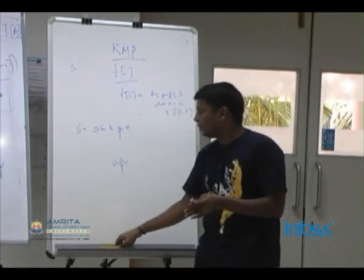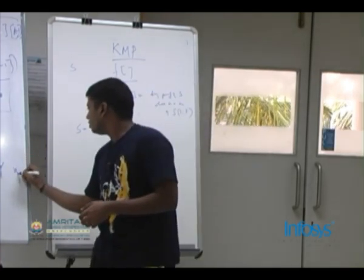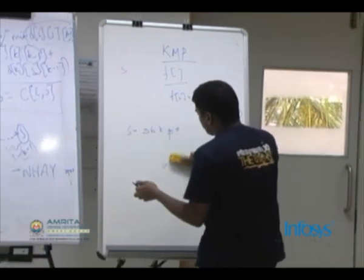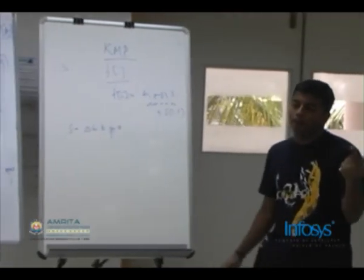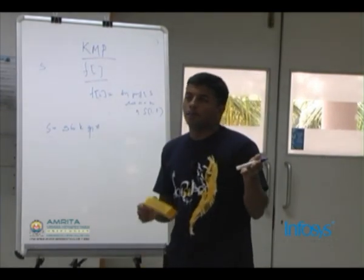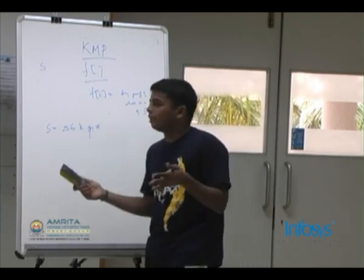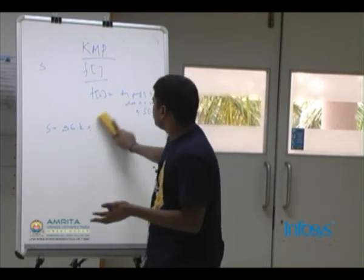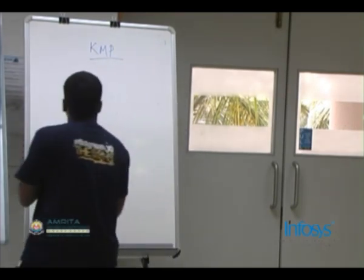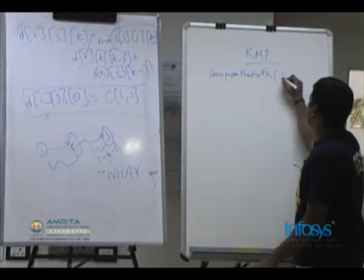I'll go into the details of KMP now. This is a basic implementation and any implementation of KMP would work. The string to match is around 27 characters and you might not be able to store it, so you can take it online character by character. I'll first discuss computing f for a given string s — the compute prefix function.